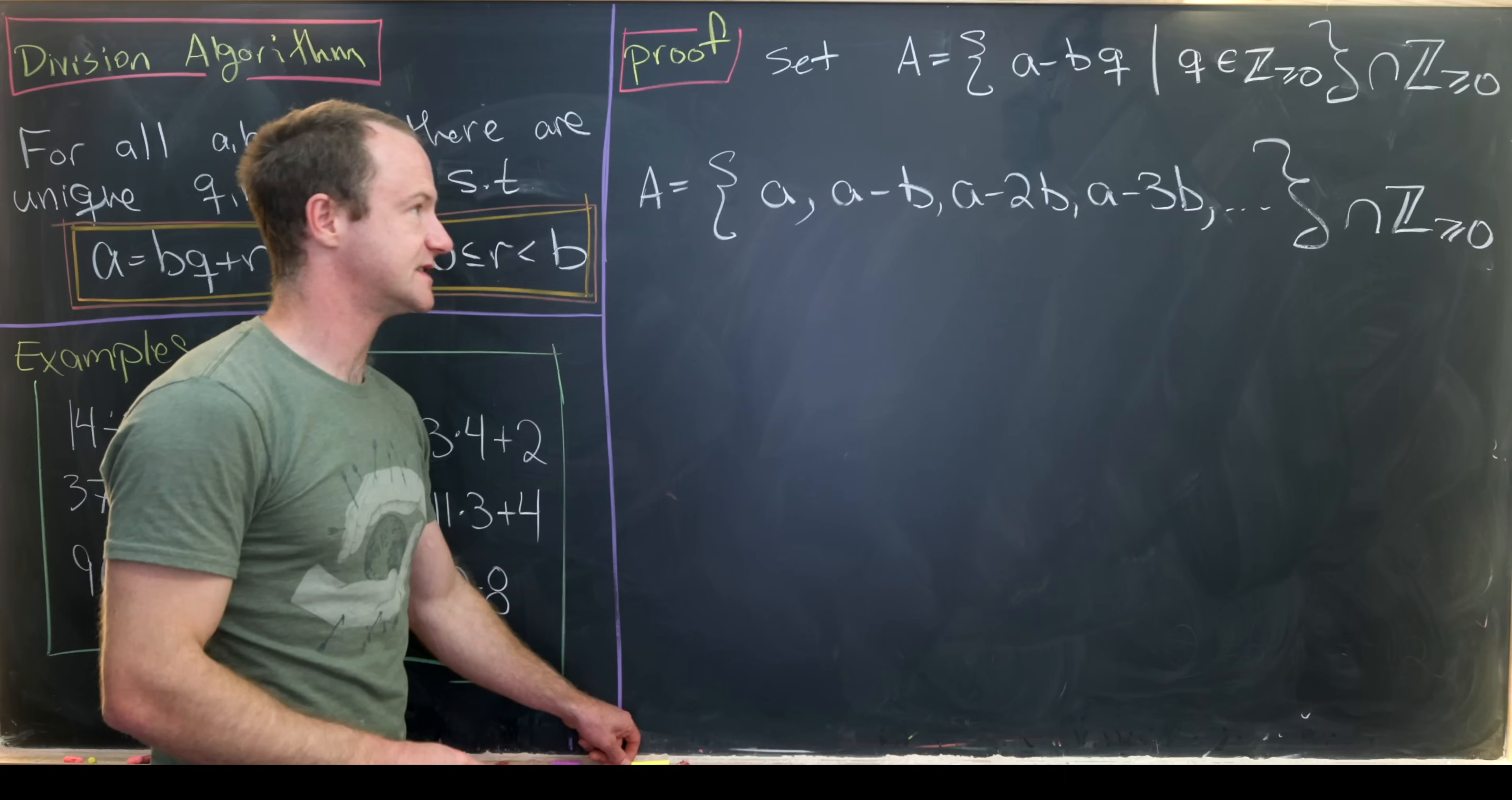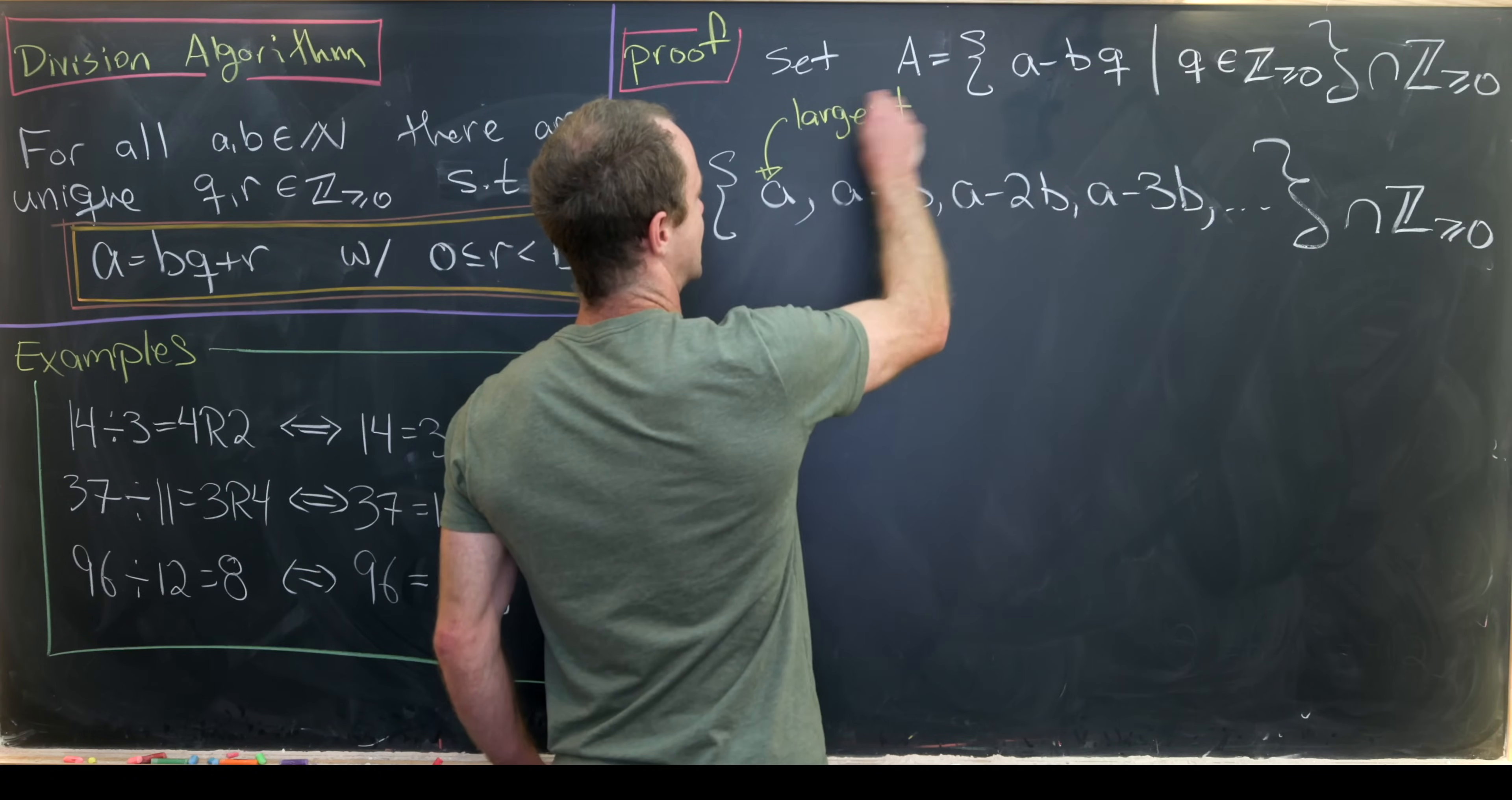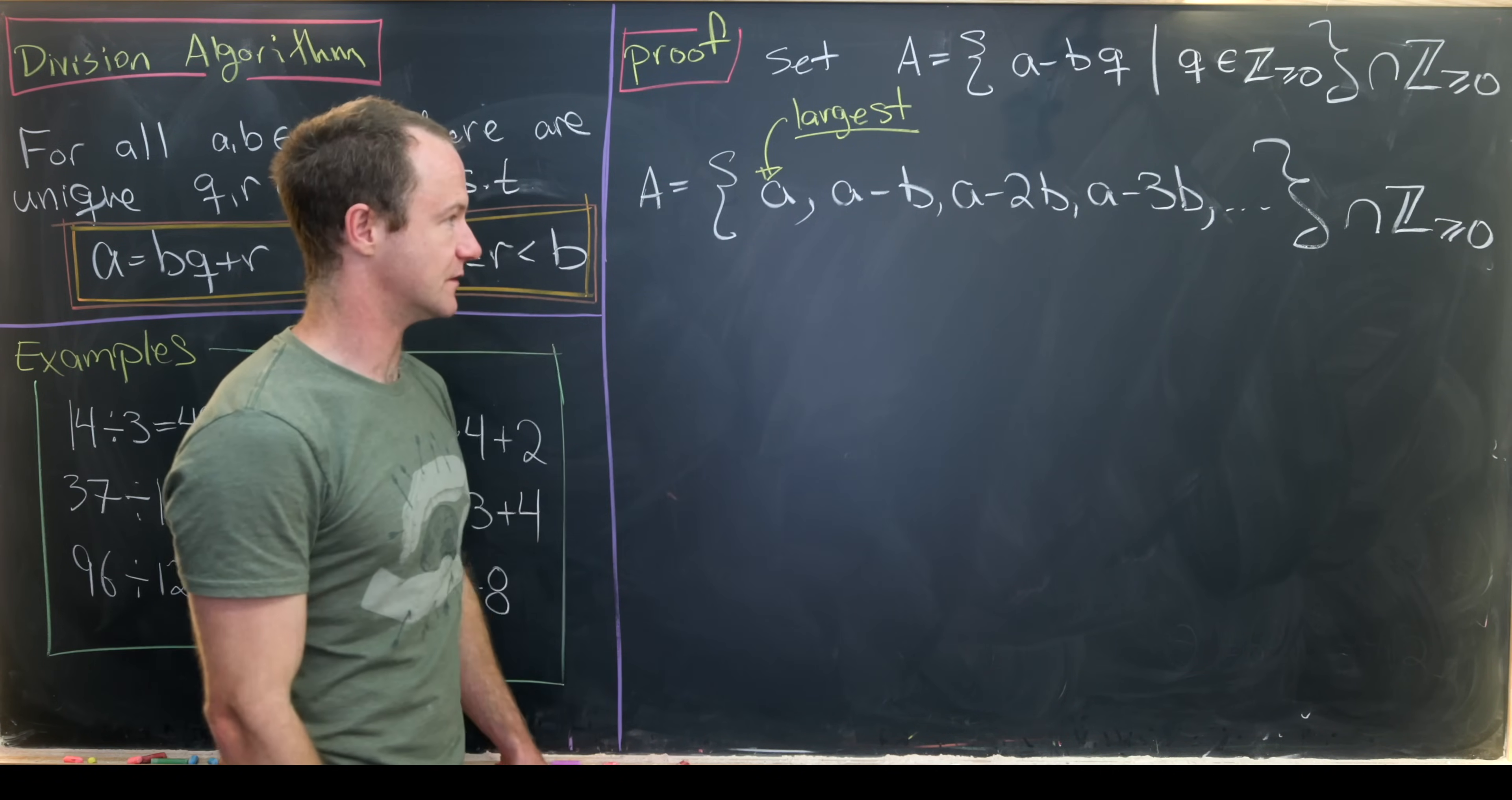The important thing to notice is that since a and b are natural numbers by our setup, this is most definitely the largest element of this set, because here we're subtracting b, that's going to give us something smaller. Here we're subtracting 2b, that's also going to give us something smaller, and so on.